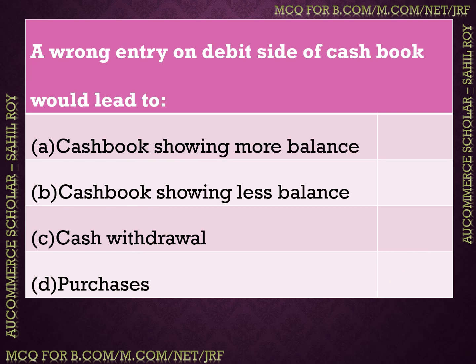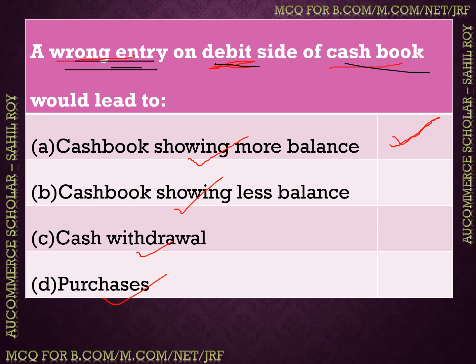Next question: a wrong entry on the debit side of cash book would lead to — options: (A) cash book showing more balance, (B) cash book showing less balance, (C) cash withdrawal, (D) purchases. The correct answer is option A — cash book showing more balance. If a wrong entry is made on the debit side of the cash book, it will show a higher balance than the actual.